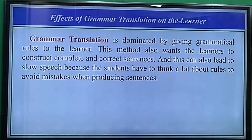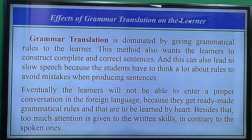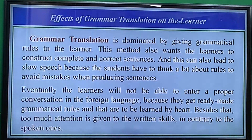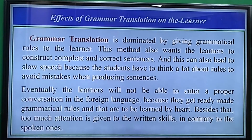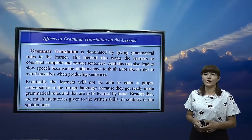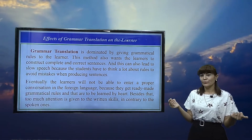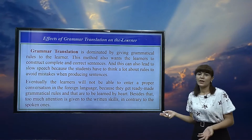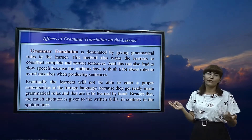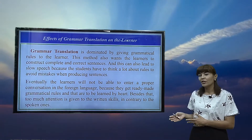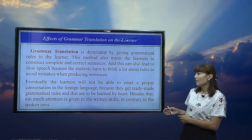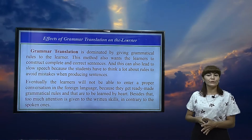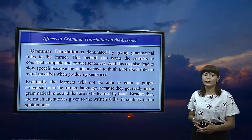Regarding the effects of the grammar translation method on learners: it is dominated by giving grammatical rules to the learner. This method wants learners to construct complete and correct sentences, which can lead to slow speech because students have to think a lot about rules to avoid mistakes. Eventually, learners will not be able to enter a proper conversation in the foreign language because they rely on ready-made grammatical rules learned by heart. Too much attention is also given to written skills contrary to spoken ones.